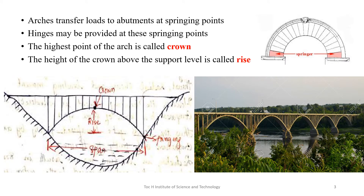Arches transfer loads to abutments at springing points, which are shown in this figure. Hinges may be provided at these springing points. The highest point of the arch is called the crown or apex of the arch. The height of the crown above the support level is called the rise — that is, the height of the apex from the springing points.